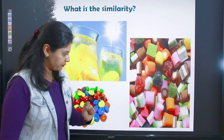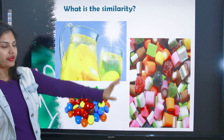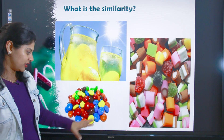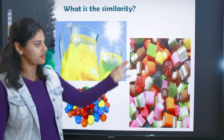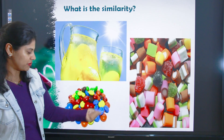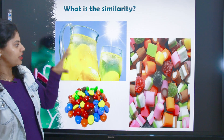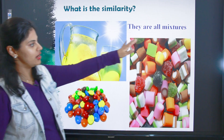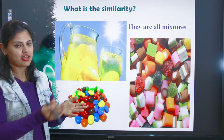Similarly, aap comment box mein bata sakte hain agar aapko samajh mein aa raha hai ki hum kis cheez ke baare mein baat kar rahe hain. You can see a jug of juice, lollies, and M&M gems — very favorite for children. Yaha pe jo common hai: this is basically a mixture of so many things — sugar, salt, coating, different materials, chocolates, lemon juice. They are all mixtures, also divided further into homogeneous and heterogeneous.